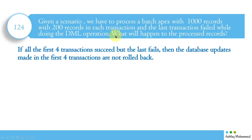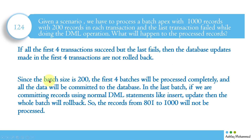The question is asking what happens to the first four transactions if the last one fails. If the first four transactions succeeded but the last one fails, then the database updates made in the first four transactions are NOT rolled back. The first four batches of 200 records each — 800 records total — will be processed and committed successfully, since there were no issues in those transactions.